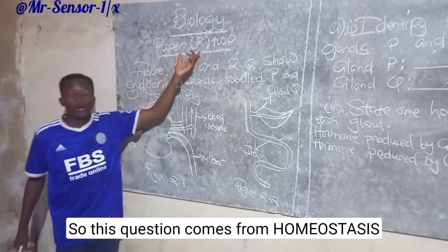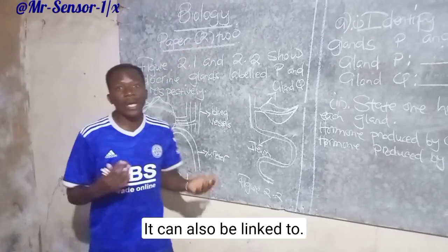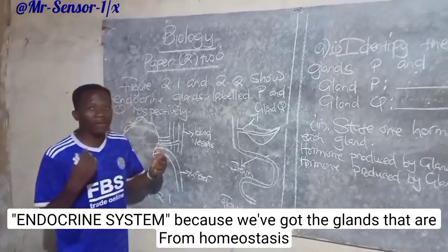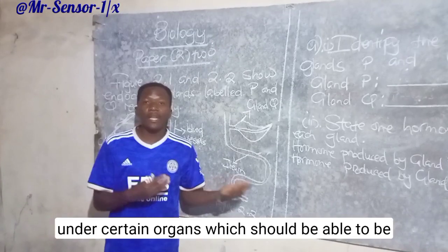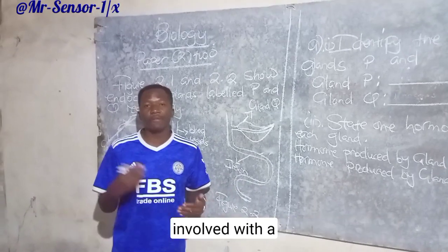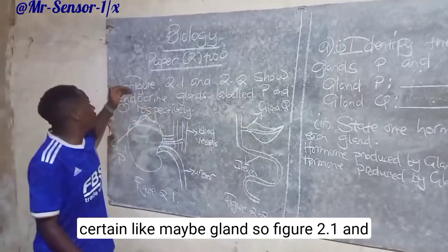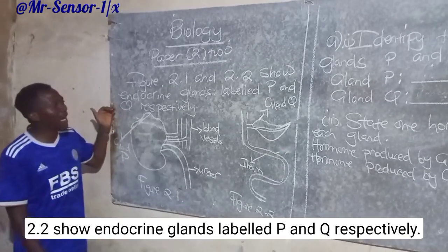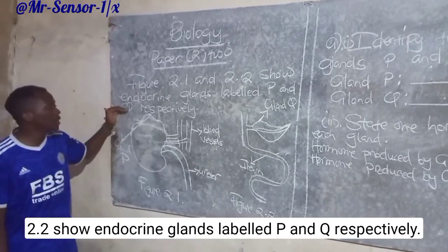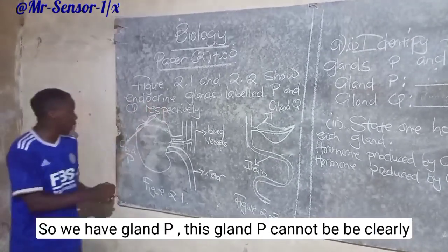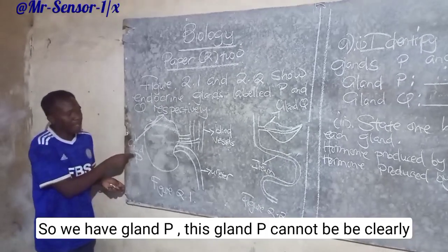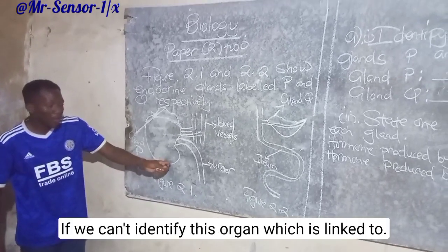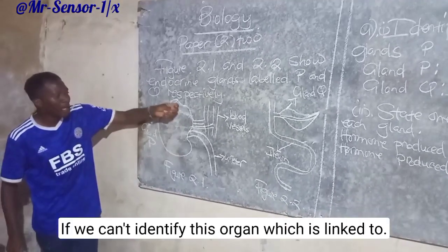This question comes from homeostasis. It can also be linked to the endocrine system, because we put the glands that are from homeostasis under certain organs which can be evoked in a certain gland. So figures 2.1 and 2.2 show endocrine glands labeled P and Q respectively. This gland P cannot be clearly identified if we can't identify the organ which is linked to gland P.